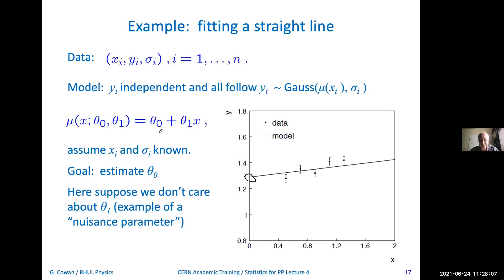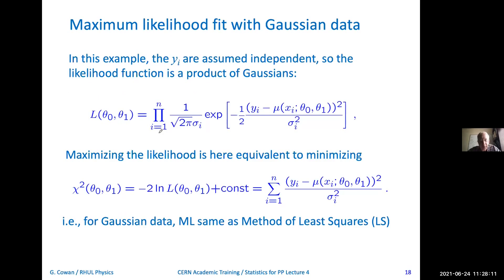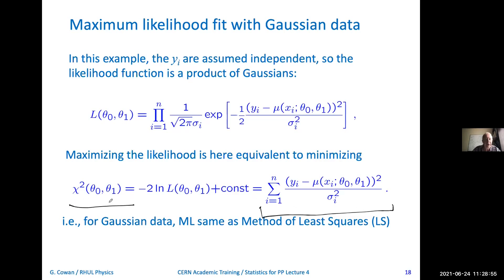Maybe when I started doing this analysis, I didn't even think that Y depended on X. And then maybe somebody comes along and says: you might have a systematic uncertainty if you do that, because the mean of Y might depend on this variable X. So you'd better insert another nuisance parameter into your model to account for that systematic uncertainty. There's going to be a price to pay for that: it's going to increase the statistical uncertainty in my estimate of the parameter of interest theta_0. Since the Y_i's are independent and Gaussian distributed, the likelihood function is simply a product of Gaussians. When you take the log of the likelihood, or equivalently minimize the negative log of the likelihood, negative two times the log of the likelihood turns out to be the sum of squares — up to a constant — which in physics is usually called the chi-squared.